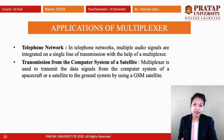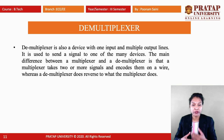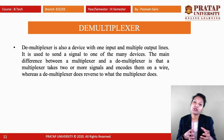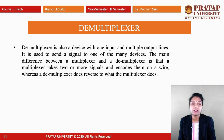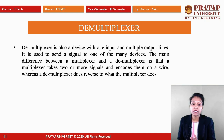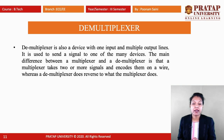A demux is the opposite or inverse process of a multiplexer. In a multiplexer many inputs give a single output; in a demultiplexer one input gives many outputs. A demultiplexer is a device with one input and multiple output lines, used to send a signal to one of many devices. The main difference is that a multiplexer takes two or more signals and encodes them onto a wire, whereas a demultiplexer reverses that process.